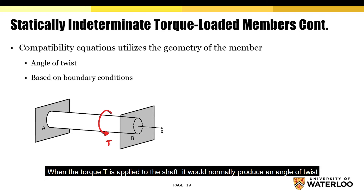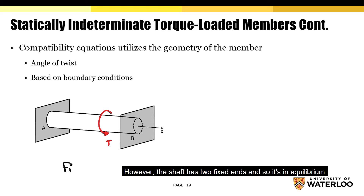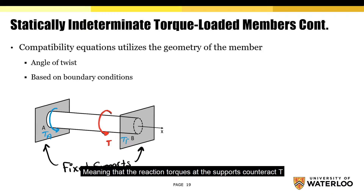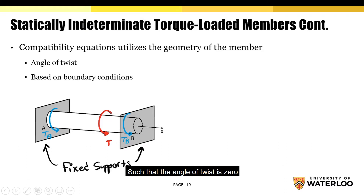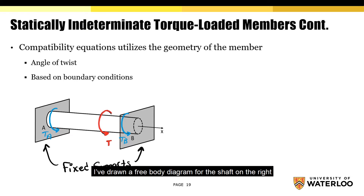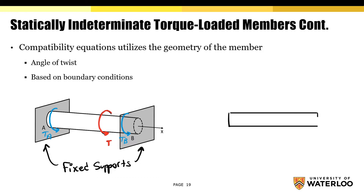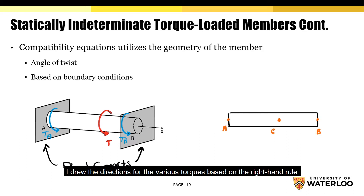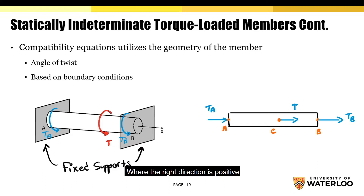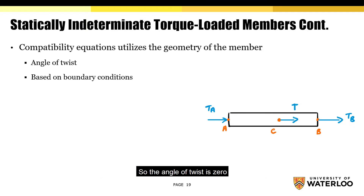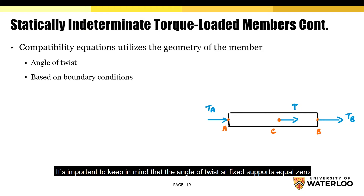When the torque T is applied to the shaft, it will normally produce an angle of twist. However, the shaft has two fixed ends and so it's in equilibrium, meaning that the reaction torques at the supports counteract T such that the angle of twist is zero. To help explain the compatibility equation, I've drawn a free body diagram for the shaft. I drew the directions for the various torques based on the right-hand rule, where the right direction is positive. As previously mentioned, the shaft is in equilibrium, so the angle of twist is zero. It's important to keep in mind that the angle of twist at fixed supports equals zero.